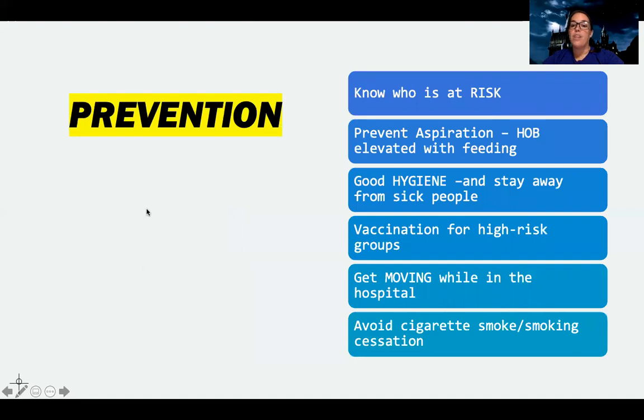Overall, as the nurse to help with prevention, I need to know who is at risk. So who has a higher risk of getting pneumonia? If you remember that list from that first slide, who's going to be at the higher risk, be monitoring for that, looking for signs and symptoms of that. Prevent aspiration. Like if I'm feeding a patient tube feeding, which we'll talk about later in the semester, make sure their head of bed is elevated, or if they're eating just even a regular tray that they're not laying down and trying to swallow food. Do what I can to prevent those causes of pneumonia. Good hygiene and staying away from crowds and sick people is really key.